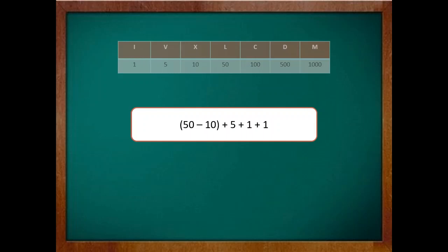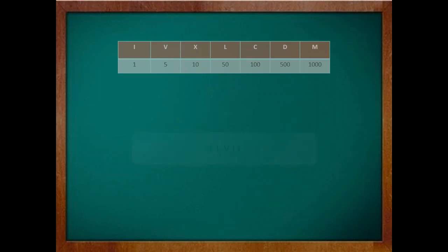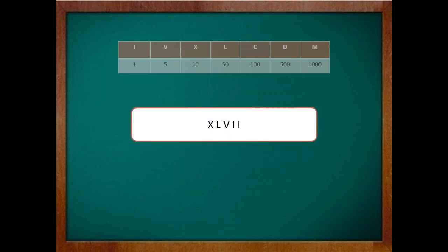Now how do you write 50 minus 10 in Roman form? Remember the rule of subtraction? If you have to subtract 10 from 50 you need to write X before L. So the number becomes XLVII.